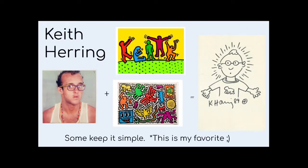Keith Haring was a street artist, meaning most of his artworks occurred on the street where he drew them. He also has a very simple but special style. You can really see it in a lot of his artworks — almost like doodles or emojis. On the far right, we have an artwork that Keith Haring created of himself, so it's a self-portrait. It's very simple, there's not a lot of lines to it, just simple lines and shapes, but it does look like him.